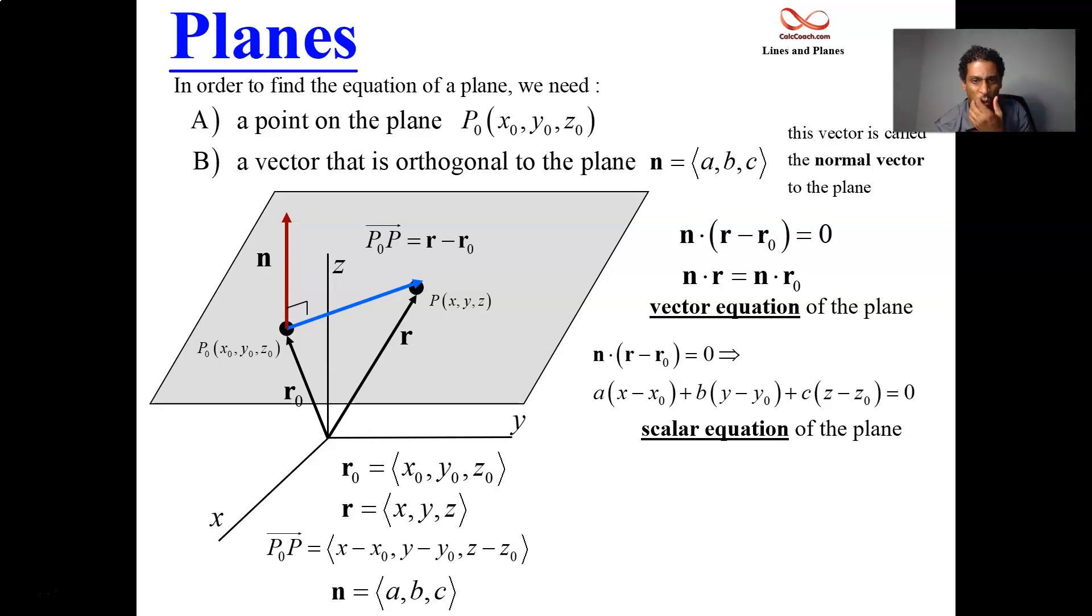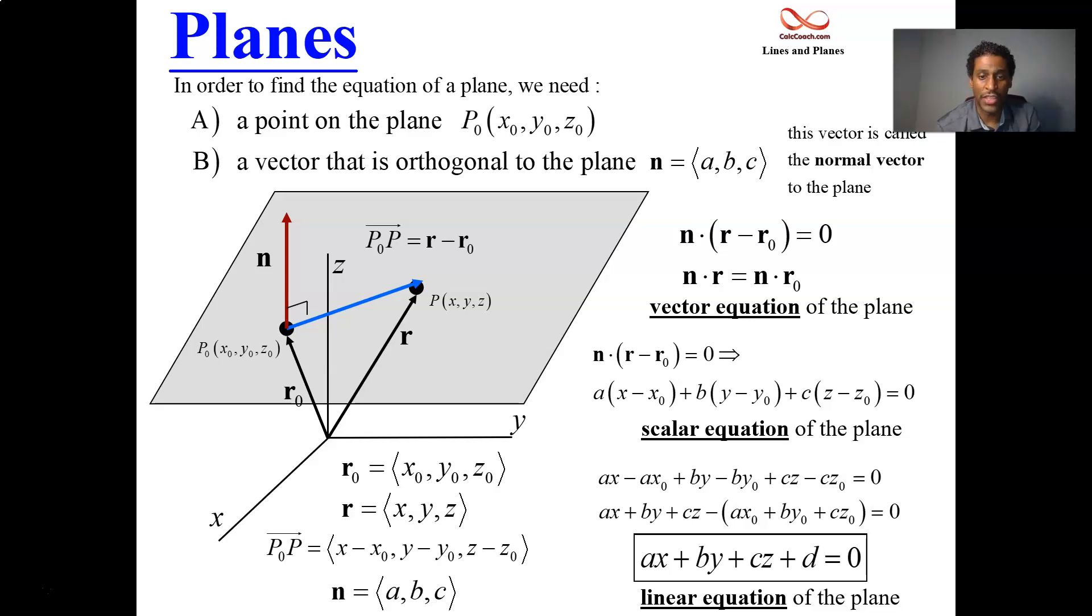The one at the bottom is going to be our go-to. Take this equation and multiply it all out. AX minus AX0, BY minus BY0, CZ minus CZ0 equals to zero. Now let's collect terms. We have AX plus BY plus CZ, and then all these other terms have a negative on them. We can take that negative out, AX0 and BY0 and CZ0 should be equal to zero. And lastly, we're just going to recast what's in that parentheses as negative that. That's going to be what we call D. And so AX plus BY plus CZ plus D is going to be equal to zero. And this is called the linear equation of the plane.